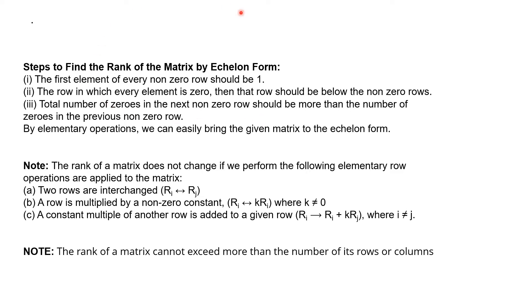We are going to achieve this echelon form by using the following instructions. We can interchange any two rows (R_i ↔ R_j). We can multiply a row by a non-zero constant (R_i → kR_i), and a constant multiple of another row can be added to a given row (R_i → R_i + kR_j where i ≠ j). This k could be positive 1 or negative 1.